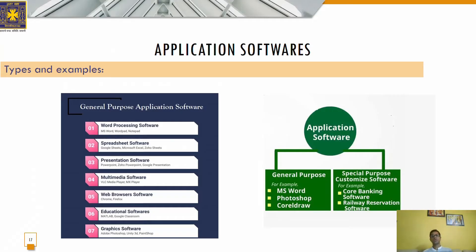Those are the two primary categories of application software, which can be further divided into the following subcategories. The first one is word processing software.